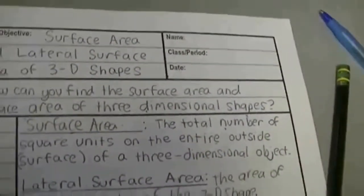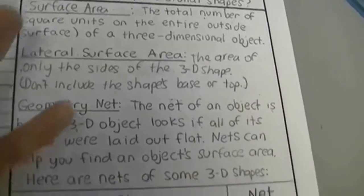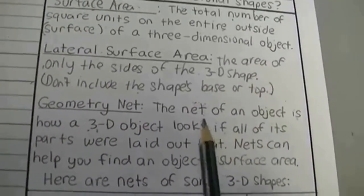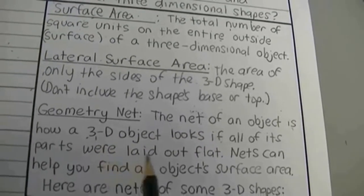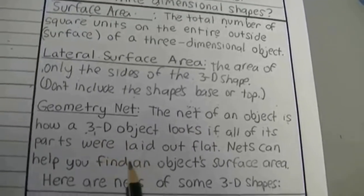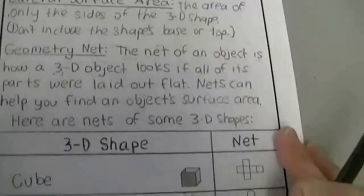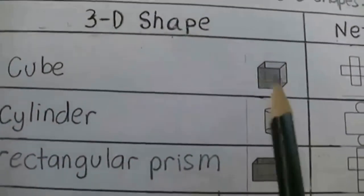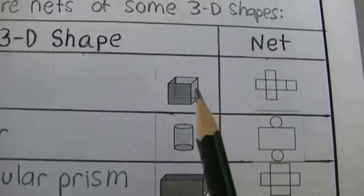A geometry net — sometimes I'll just call it a net, but it's not like a fishing net. A net in geometry is how a 3D object looks if all of its parts were laid out flat, and they can help you find its surface area. So here are some examples. A cube drawn out has a net that looks like this — see how it's all flattened out and taken apart.